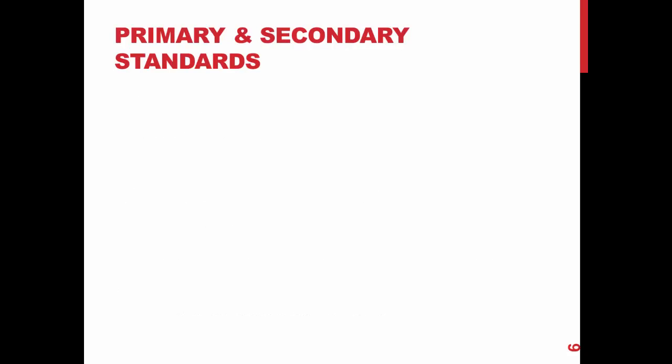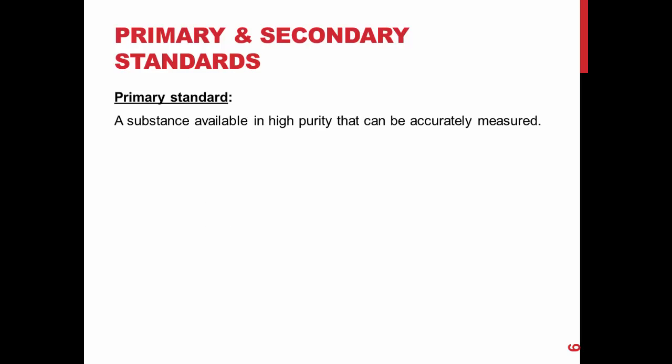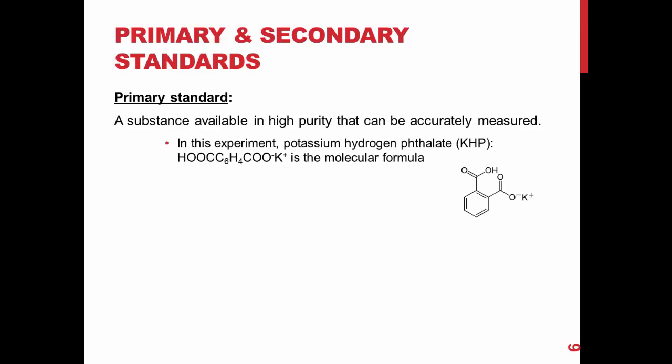In this experiment, you will be dealing with primary and secondary standards. A primary standard is a substance available in high purity that can be accurately measured. All of the relevant properties of this prepared solution are known. In this experiment, potassium hydrogen phthalate (KHP) is the primary standard.